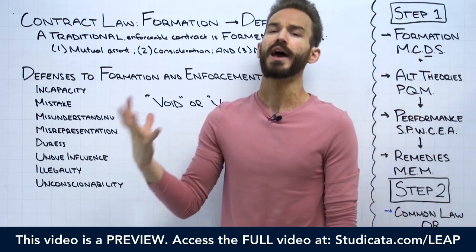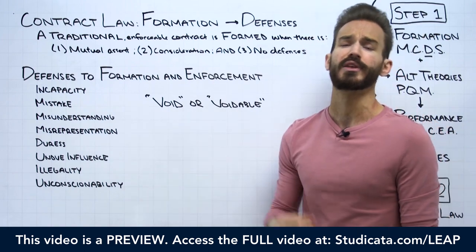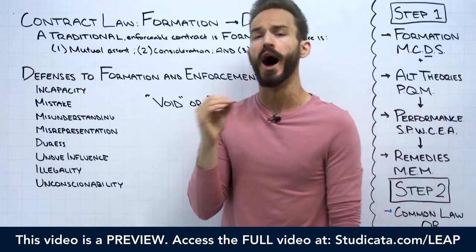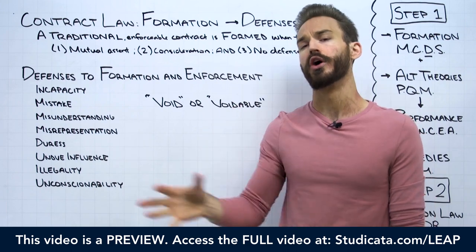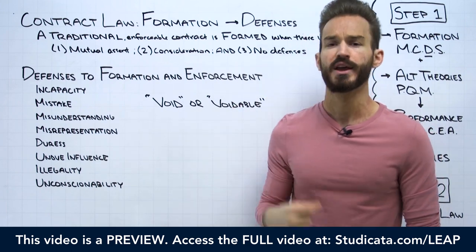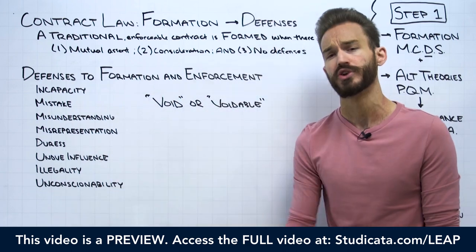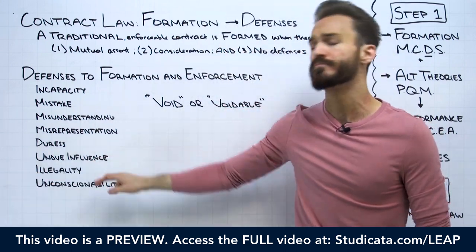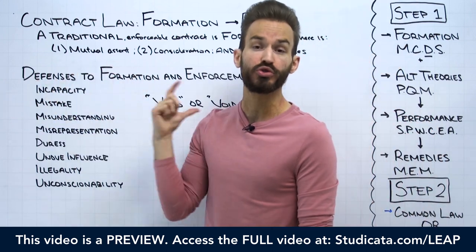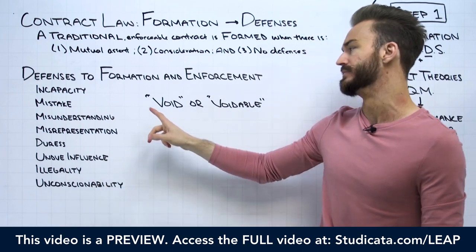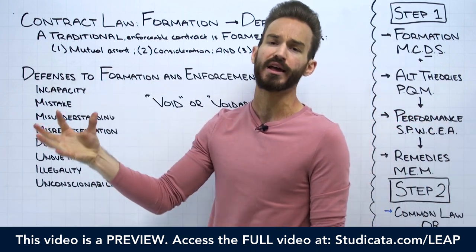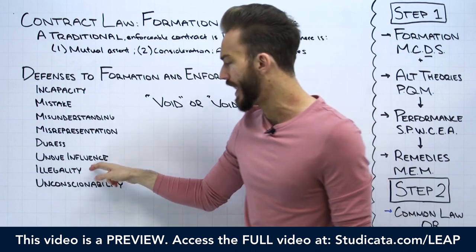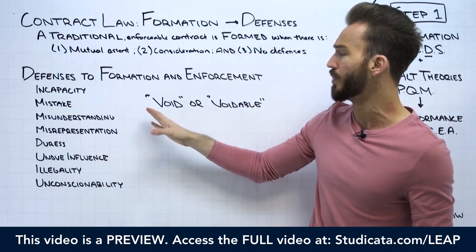A void contract means the court is going to treat the contract as though it never existed — it is a 100% nullity, unenforceable by either party under all circumstances. There's no scenario where a void contract can be enforced. For example, one of the big ones is illegality: imagine one party hires another person to commit murder. No court is going to enforce that contract in any way, shape, or form. It is 100% null and void — the court treats it as though it never existed.